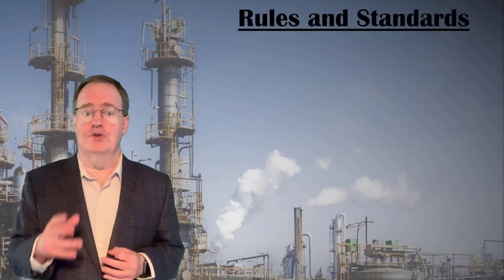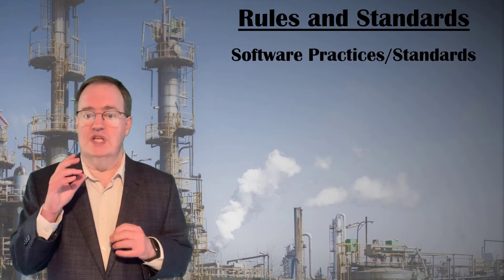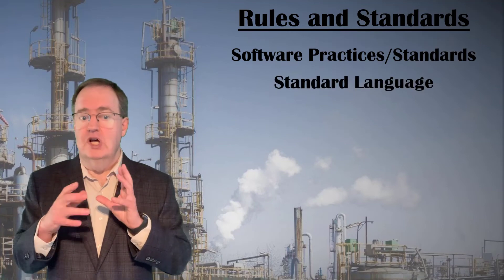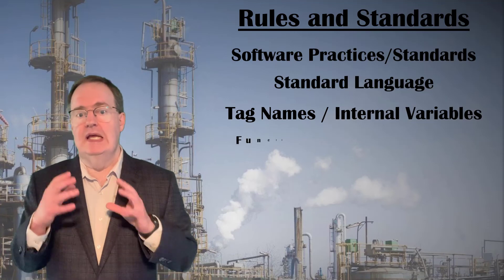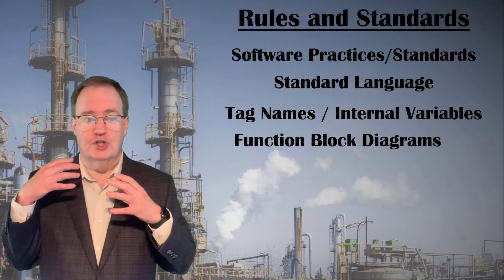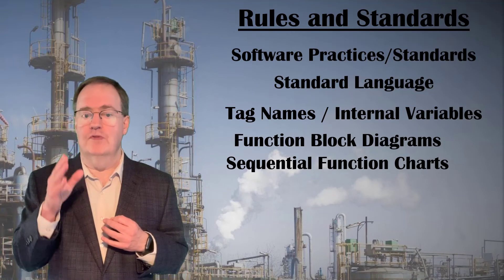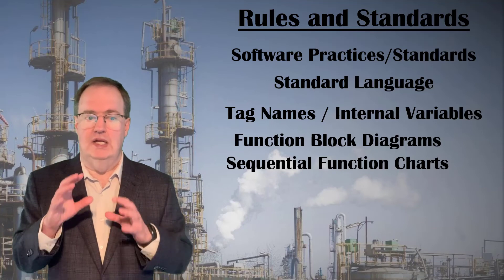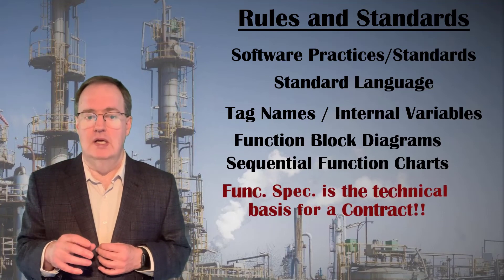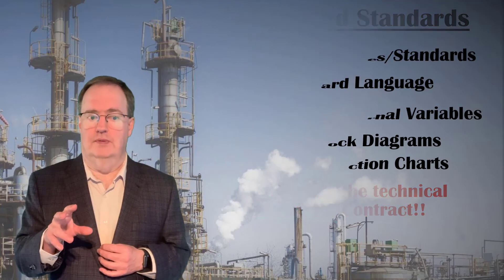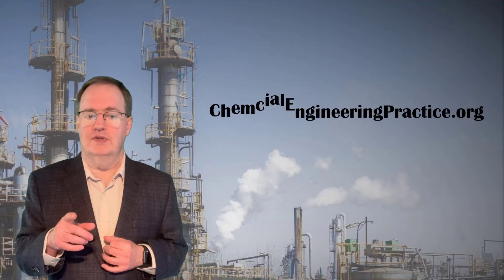Like all specifications, a functional specification should have a section for contractors and visiting internal specialists that spells out the rules for configuring control systems in your company and on your site. These rules should not change from project to project. Have a firm set of rules for tag names and variable names. Insist that continuous controls are configured using function block diagrams and that sequences are configured using sequential function charts — otherwise programmers will use their own shortcuts and hand you a system that is hard to read and maintain. A functional specification is a design document, but is also the technical basis for your contract with the contractor. Look for full text exercises and more videos at ChemicalEngineeringPractice.org.